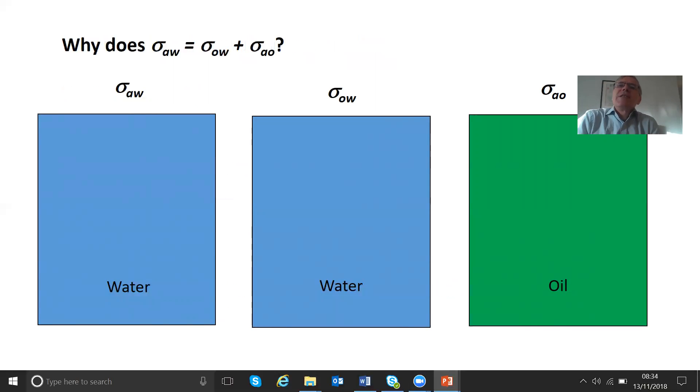Now, one of the things you notice there is that the air-water interfacial tension, which is about 70 millinewtons per meter, is almost exactly the oil-water plus the gas-oil interfacial tensions. Now, that isn't some random coincidence because of the numbers. There is a physical reason for that. So that's what we're going to talk about now.